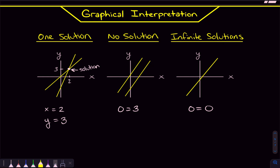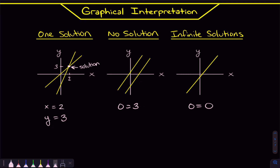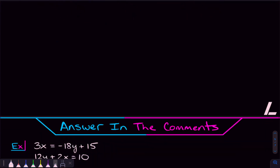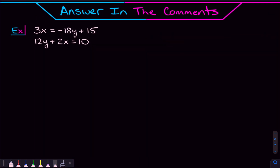That's what's actually going on graphically when solving a system of equations. Assuming you feel pretty comfortable with this, here's a problem to try and answer in the comments. Solve this system of equations — there could be one solution, no solutions, or infinite solutions. If there is a solution, let me know what it is; if not, tell me whether it's no or infinite solutions.